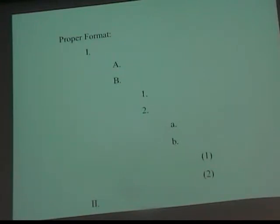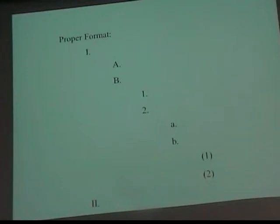If you were to divide regular Arabic numbers, your sub points are small a, small b. If you subdivide them, it's regular numbers in parentheses. If you subdivide further, it would be small a and b in parentheses. But don't make it more complicated. I've had people turn in three and four page outlines for their original oratory — that's way too much. You should be able to get everything on one page. I suggest you do it in Word so you can fix it after you show it to me.